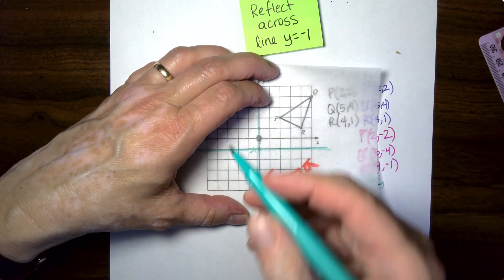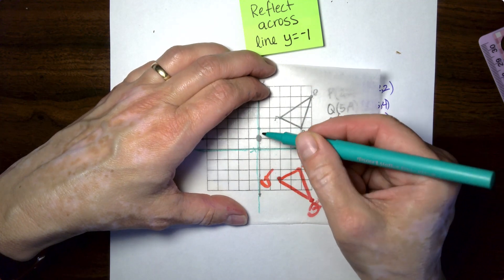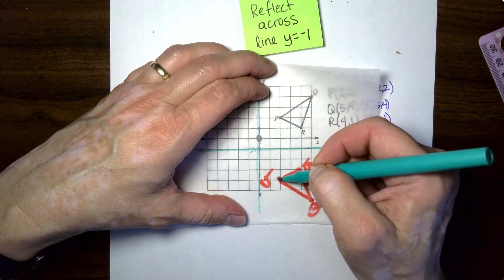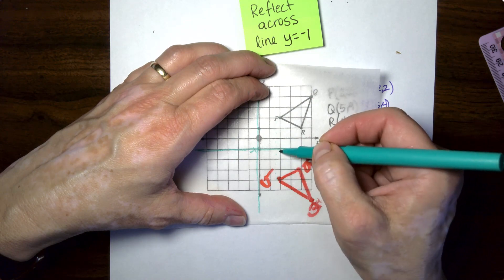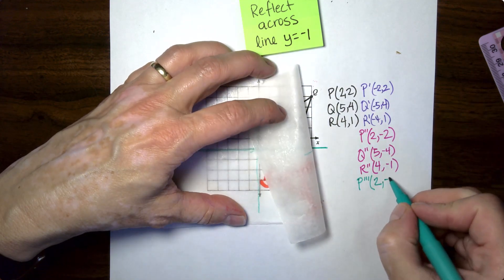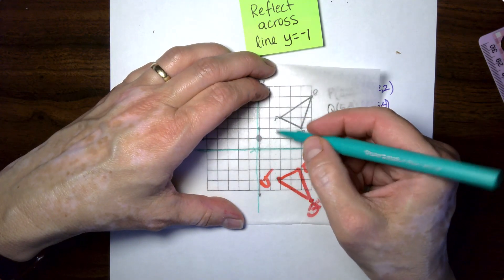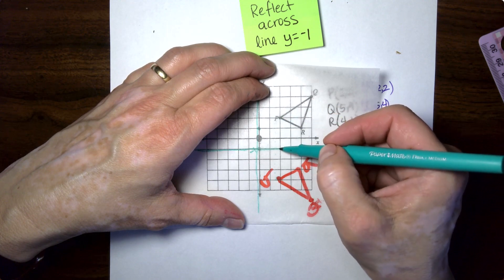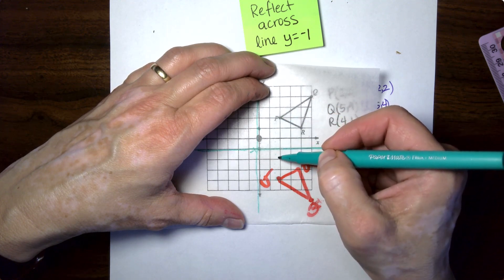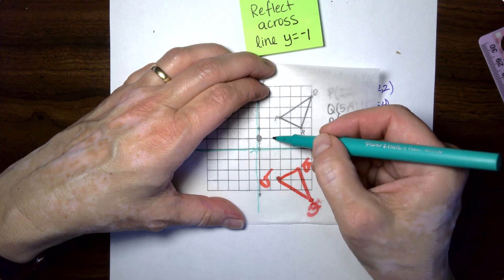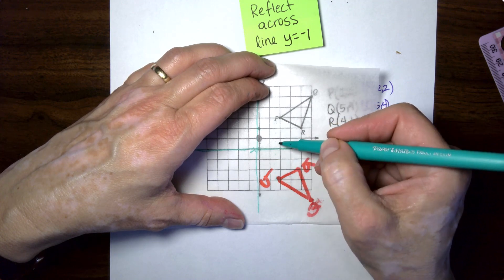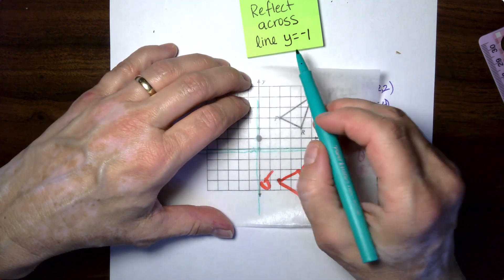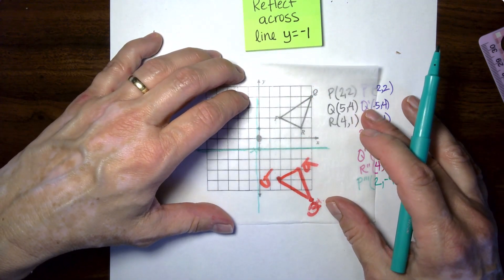But when you write your points, you still have to do it the way we do it with the X's and the Y's. The X is still positive two. Right there. The Y now is from the zero is one, two, three, four, negative four.